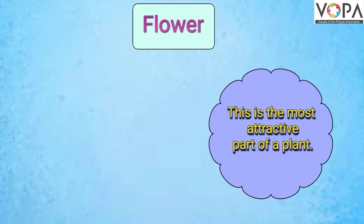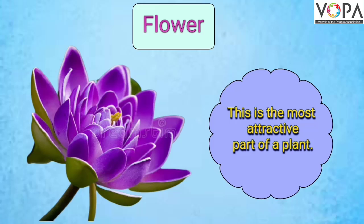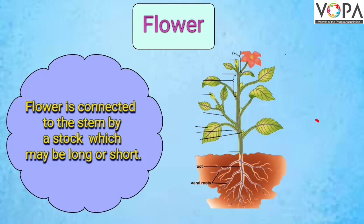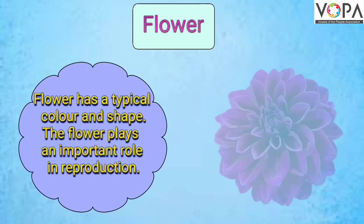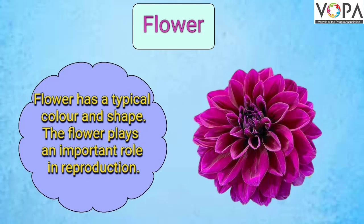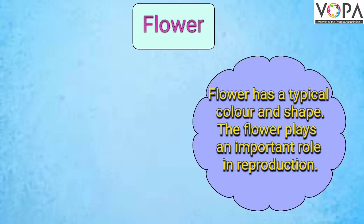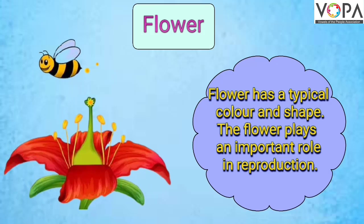The next part of the plant is flower. This is the most attractive part of a plant. It is connected to the stem by a stalk which may be long or short. A flower has a typical color and shape, and it plays an important role in reproduction.